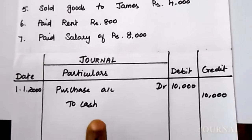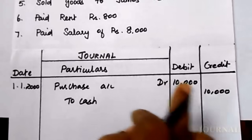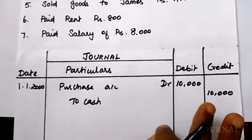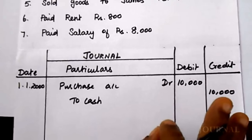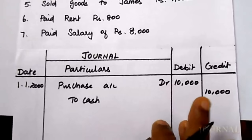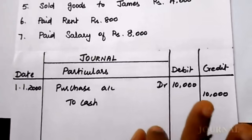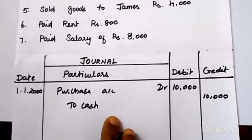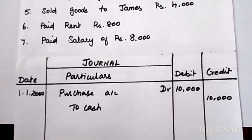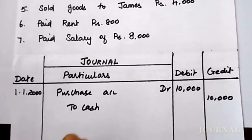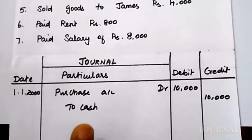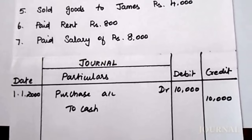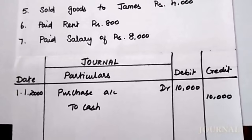Journal means you have to enter the transaction on both the debit side as well as the credit side. Based on the golden rule — real account, nominal account, and personal account — you can make entries on the debit side as well as the credit side. When you purchase any item, whether goods, stationery, or any asset, that goods comes in and cash goes out.